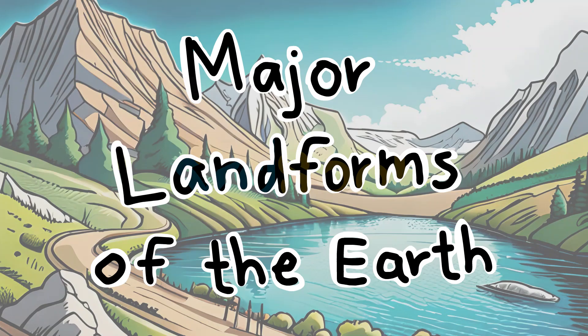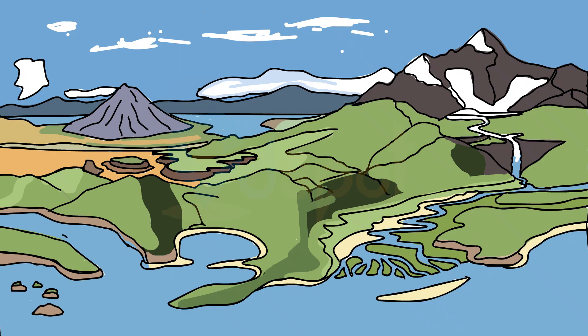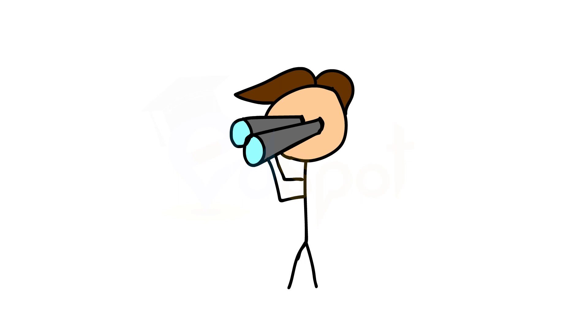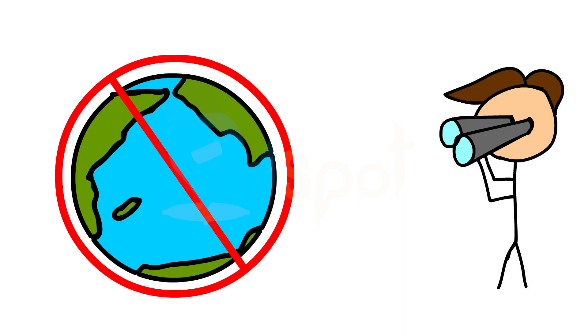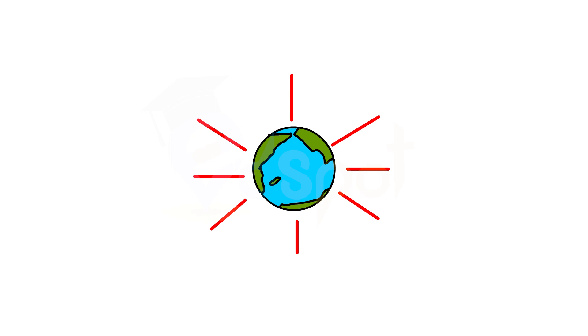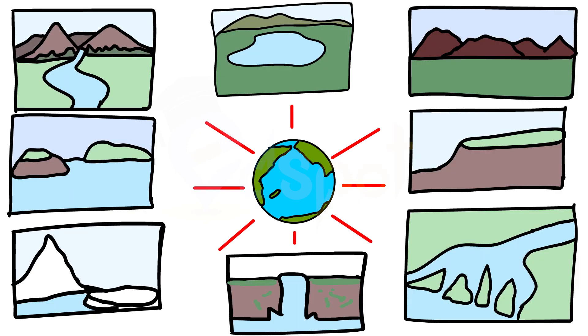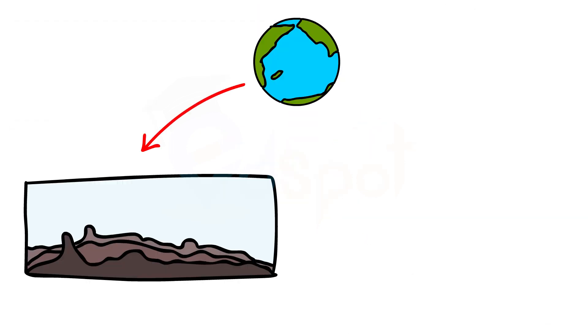Major landforms of the Earth. You must have seen some of the landform features as shown in this figure. You'll notice that the surface of the earth is not the same everywhere — the earth has an infinite variety of landforms. Some parts of the lithosphere may be rugged and some flat.